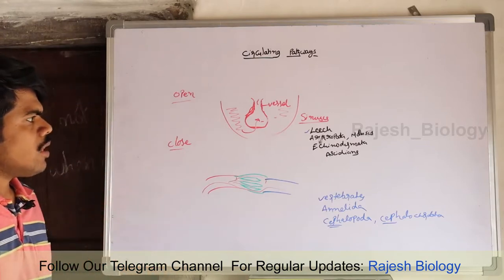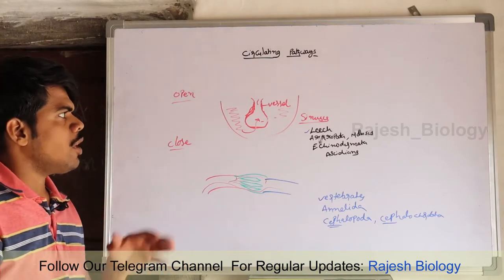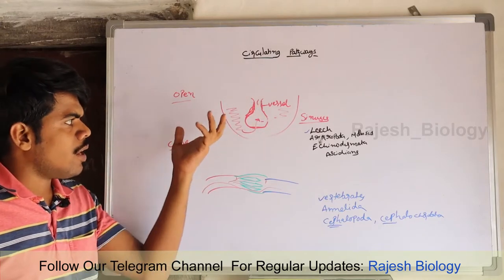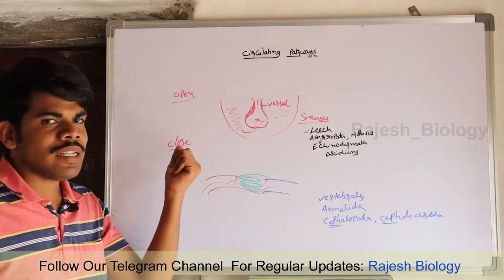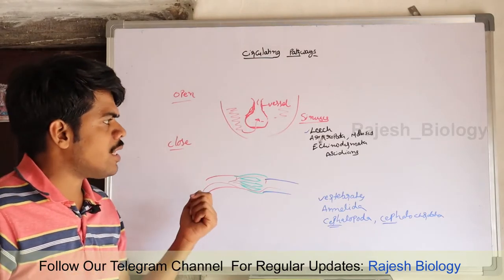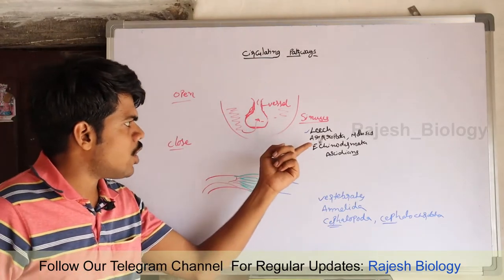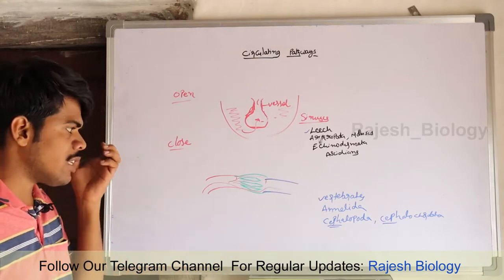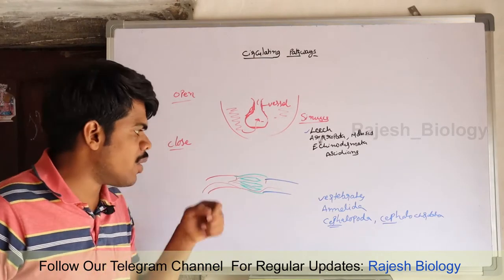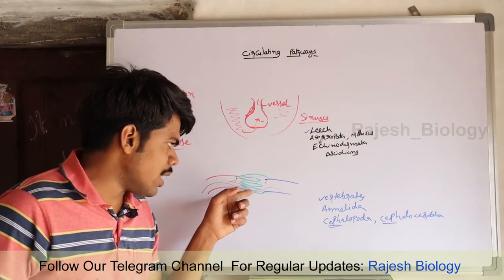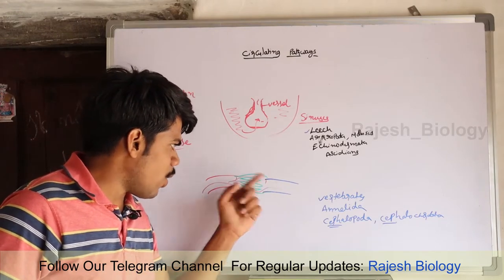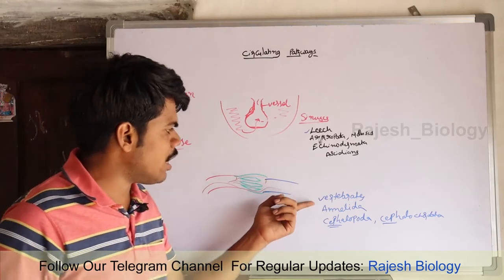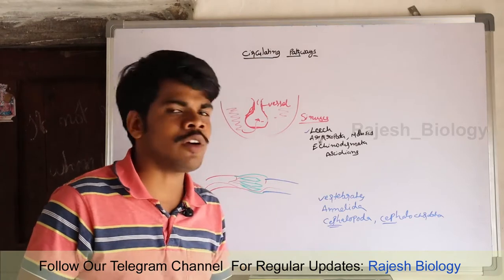So these are the differences between open type and closed type. In open type, blood flows within blood vessels and enters into body spaces known as sinuses; there is no blood capillary system. Examples: leech, Arthropoda, Mollusca, Echinodermata, and Ascidians. In closed type, blood always flows within blood vessels; blood capillaries connect arteries and veins; blood never enters body spaces. Examples: vertebrates, Annelida, Cephalopoda, and Cephalocardata.